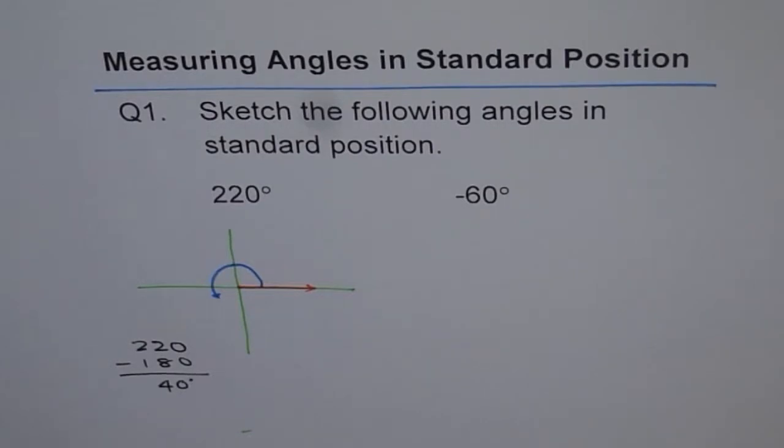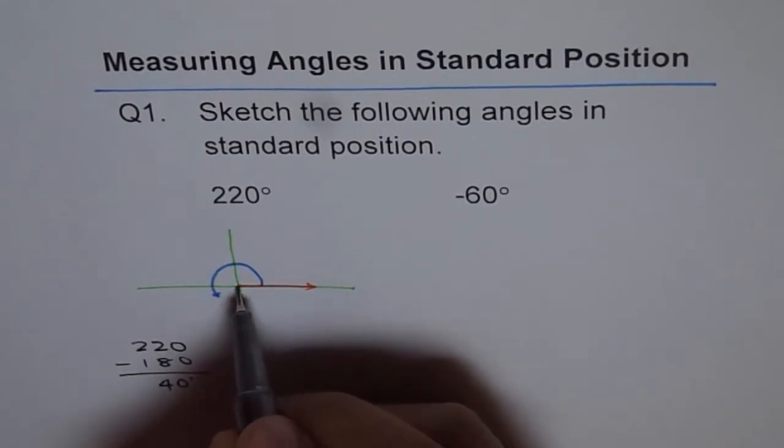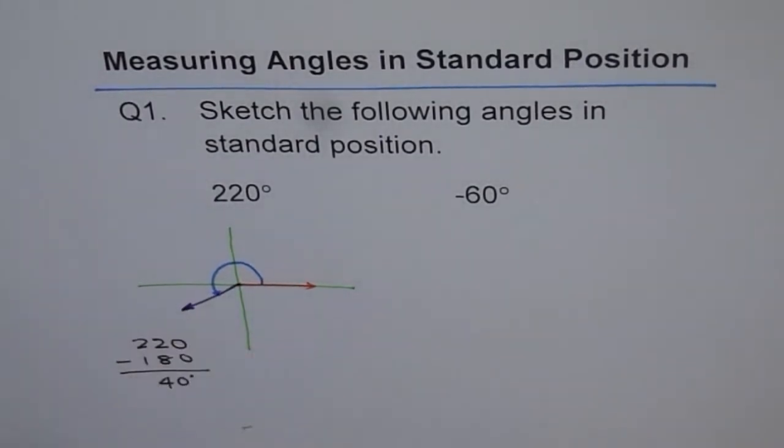So we are not using any protractor here. We are just trying to sketch approximately what it is. But our angles should be labeled to make sure that this is correct. So what we have is kind of here. That gives us around 220 degrees. How?